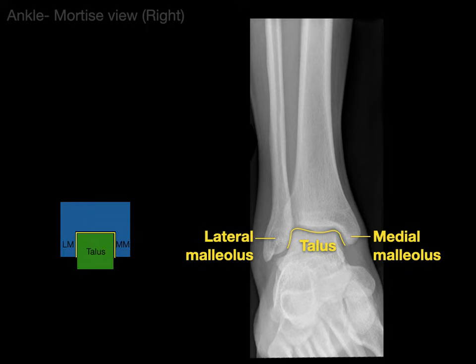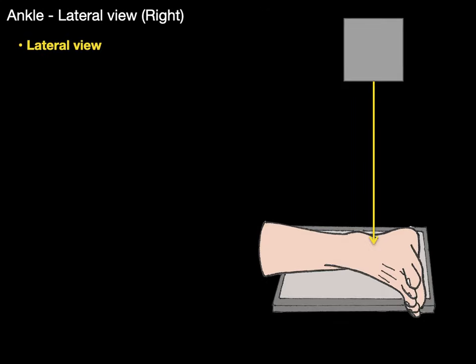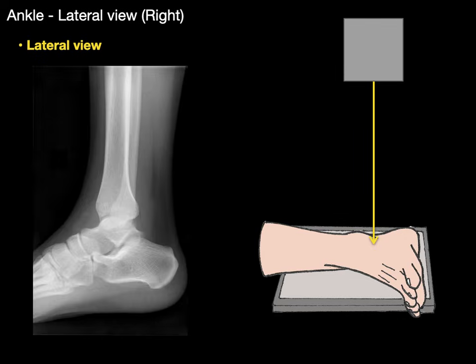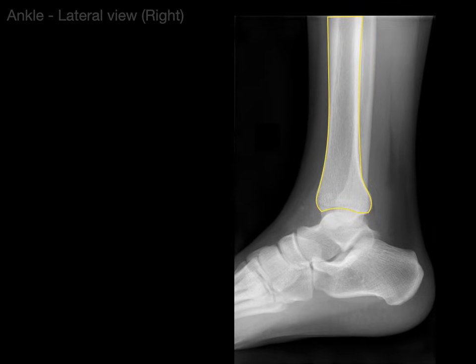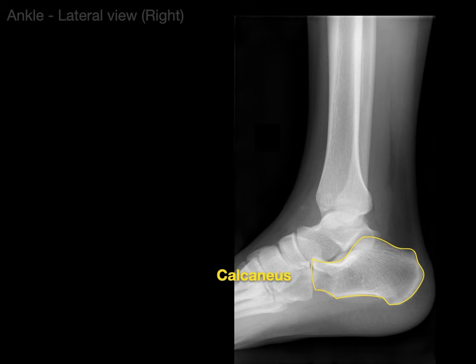The talus comes in and there is that mortise joint - this view is fantastic for showing the plateau of the tibia and the talus and these two malleoli. Finally, the ankle lateral view on the right side: the foot is placed sideways and the x-ray is shot through the ankle, giving an image that looks something like this. There is our tibia and there is the fibula. That bone right there is the talus, and that bone right there is the calcaneus.